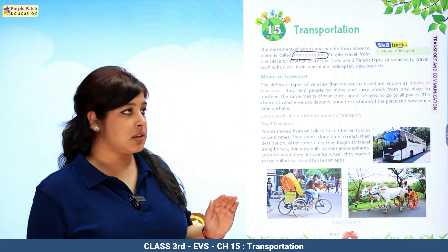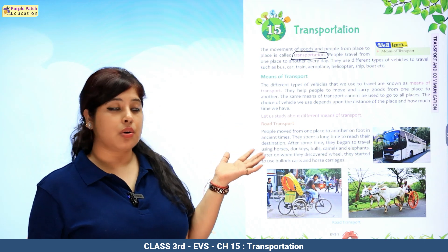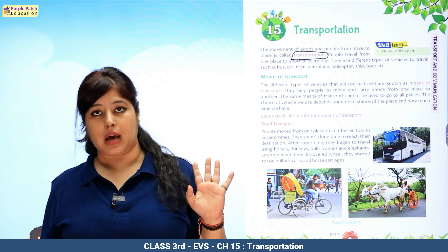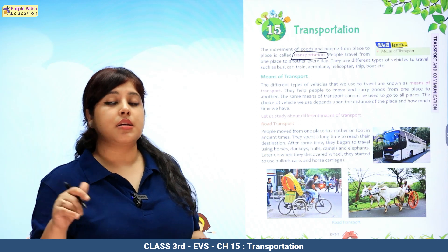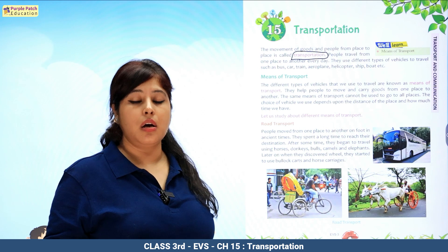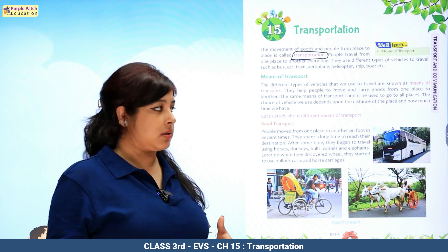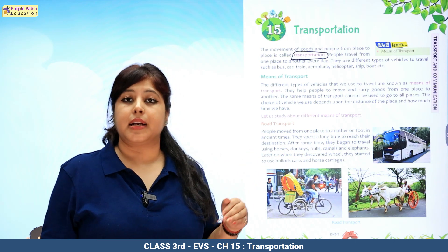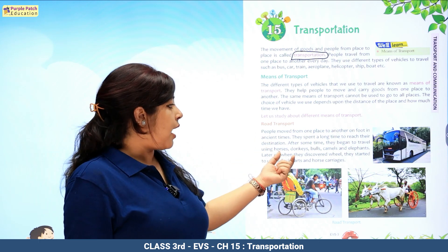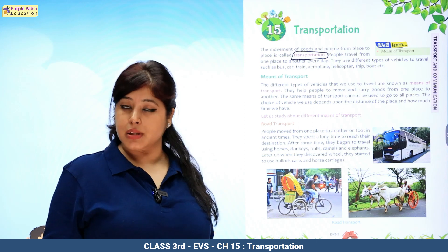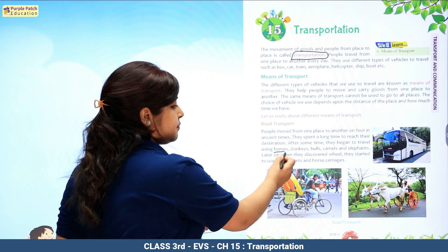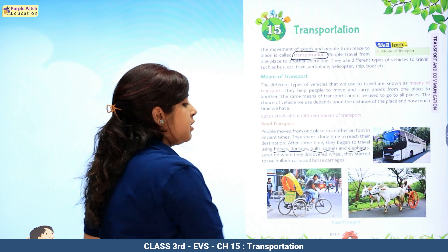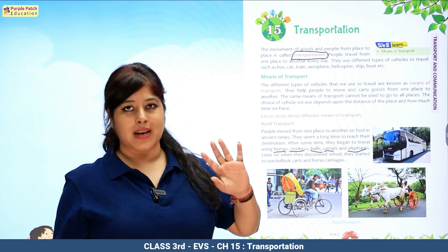Let us study about different means of transport. First is road transport. In ancient times people moved from one place to another on foot. Pehle zamaane mein housing, clothing, transportation — in sab chizo ka koi concept nahi tha. Toh log paidal hi prefer karte the, and they spent a long time to reach their destination. After some time they began to travel using animals like horses, donkeys, bull, camel, elephants. As you can see in the picture — bullock carts were used in purane zamaane mein — animal driven transport was used.